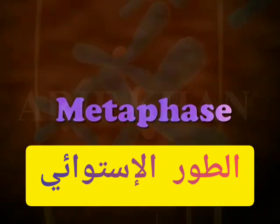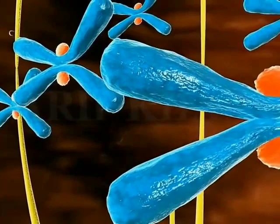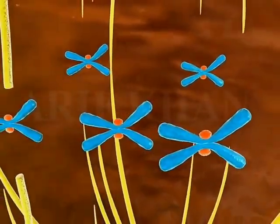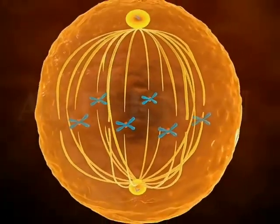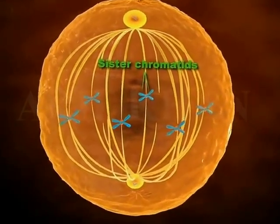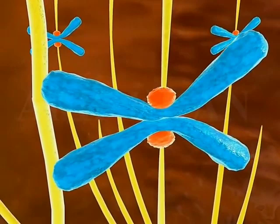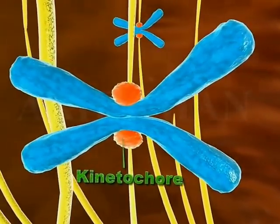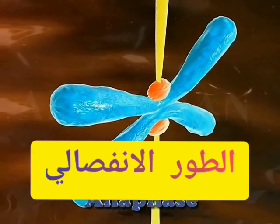During metaphase, microtubules of the spindle interact with chromosomes. This causes the chromosomes to move and align along the middle of the cell or the equatorial plate. Sister chromatids are held at the centromere, confirming the presence of protein structures called kinetochores at the surface.